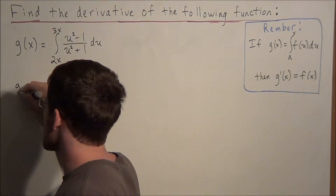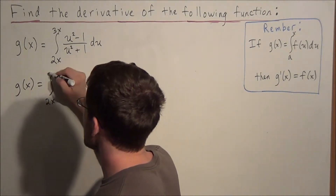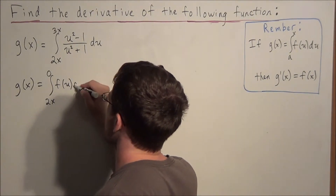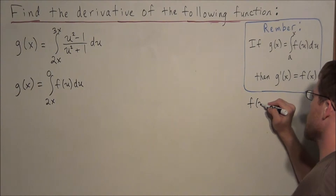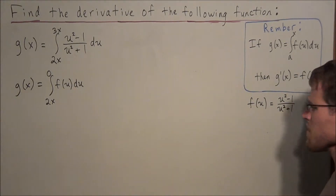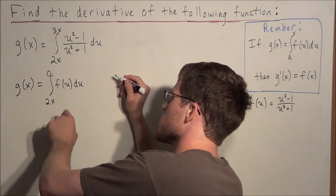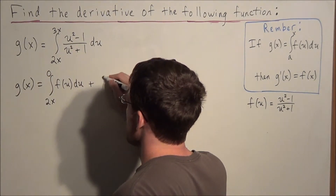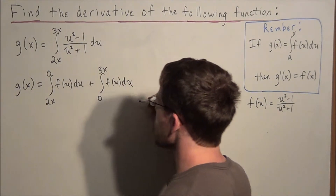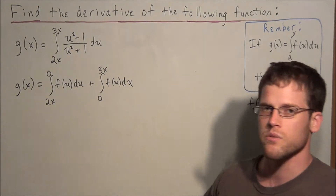The first thing we could do is break this integral into two pieces. We could break it into the integral from 2x to 0 of f of u du, where we define f of u to equal u squared minus 1 over u squared plus 1 — this just shortens the notation. The other piece goes from 0 to 3x of f of u du. So all we do is break it in parts; together they still cover 2x to 3x.